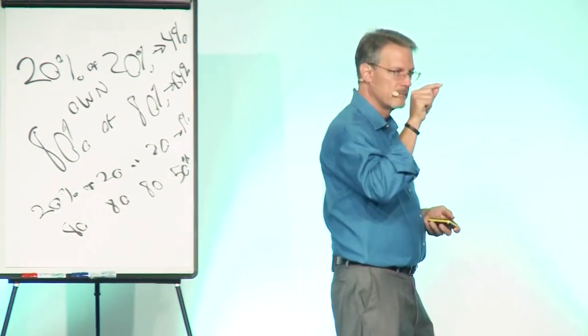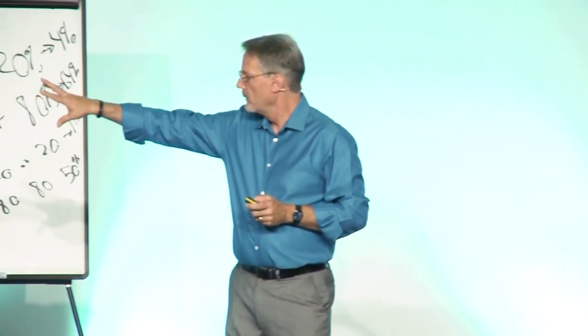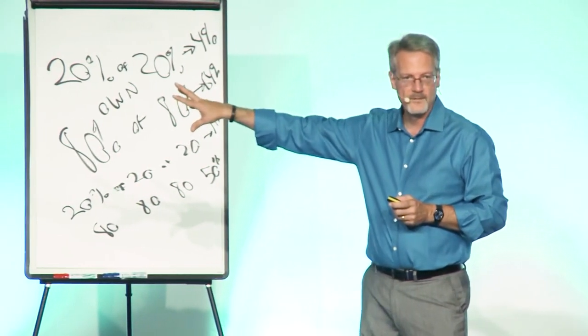80-20 is fractal. So the Grand Canyon is a picture of fractal 80-20s, right? Because there's a big canyon, but then there's smaller ones and smaller ones and smaller ones all the way down to a microscope. And it just keeps going and going.